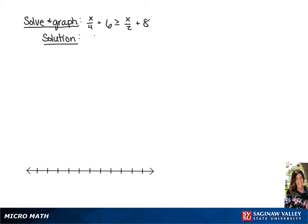We have x over 4 plus 6 is greater than or equal to x over 2 plus 8. We're going to multiply both sides of this inequality by 4 in order to clear the fractions.